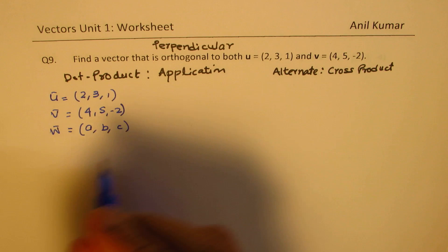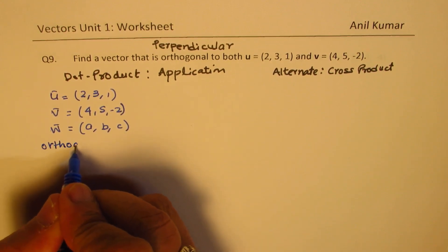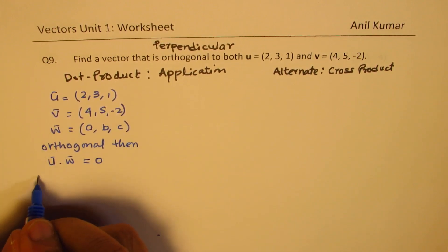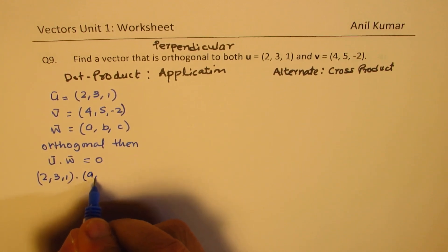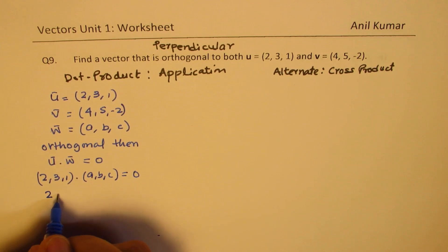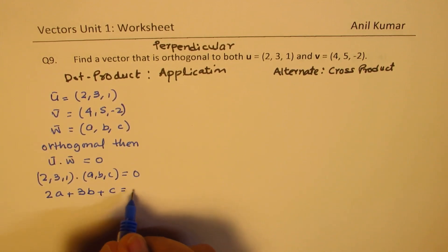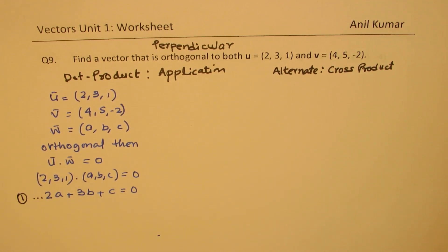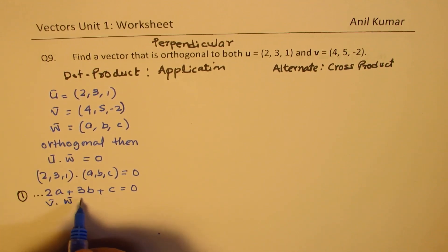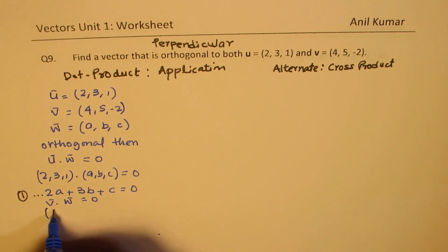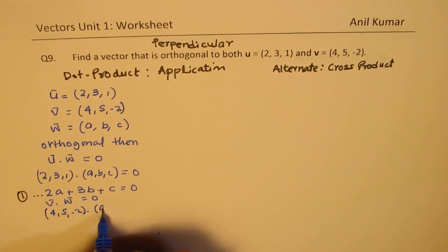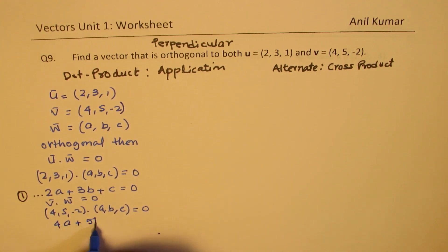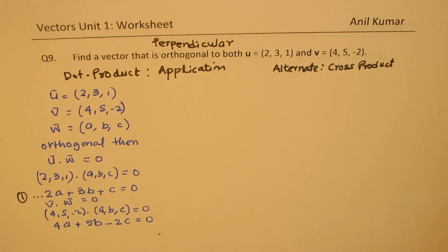If w is orthogonal, then vector u dot w should equal 0. So (2,3,1) dot (a,b,c) = 0, giving us equation 1: 2a + 3b + c = 0. It also means v dot w = 0, so (4,5,-2) dot (a,b,c) = 0, giving equation 2: 4a + 5b - 2c = 0. So we get two conditions.